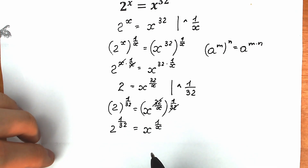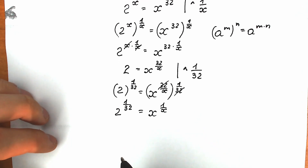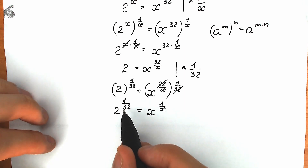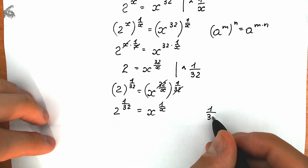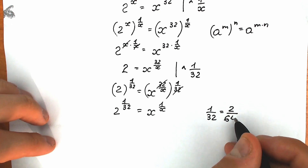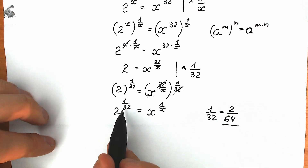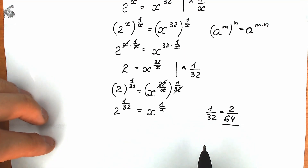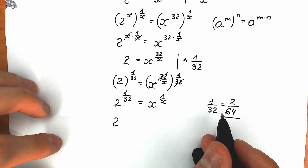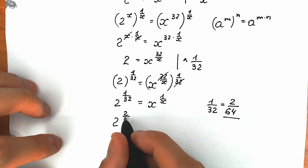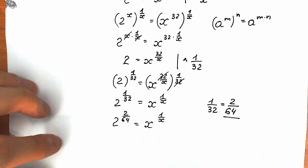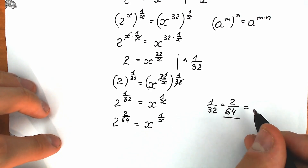That was our first step — we have a constant on the left side and a variable on the right side. Now here is a tricky moment. Instead of 1 over 32, I'm going to write it as 2 over 64, which is absolutely the same fraction. So we have 2 to the power 2 over 64 equal to x to the power 1 over x.